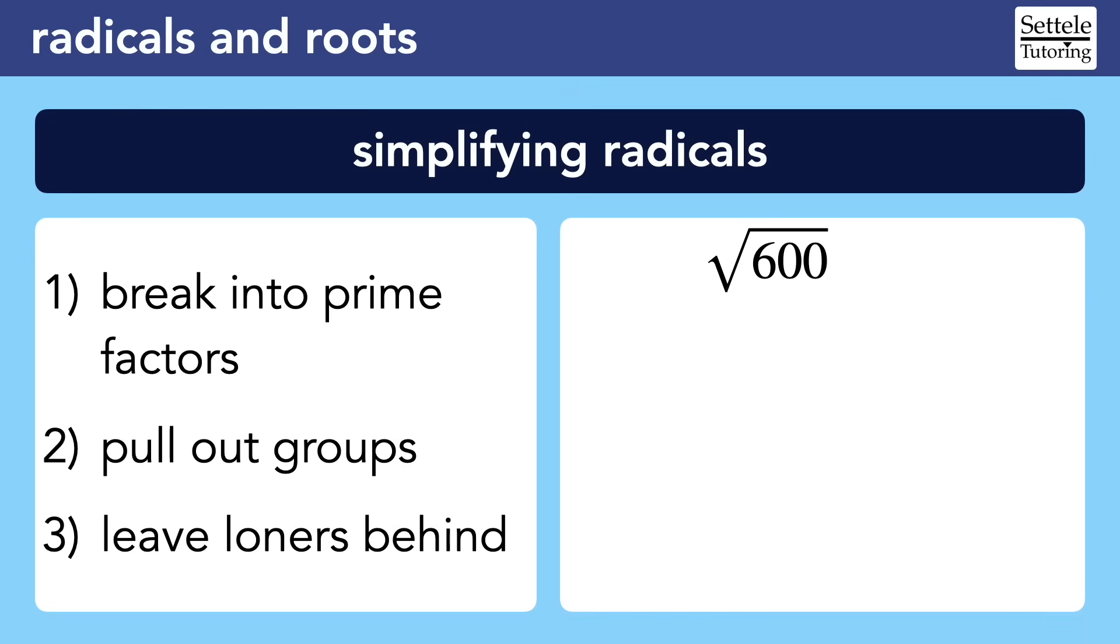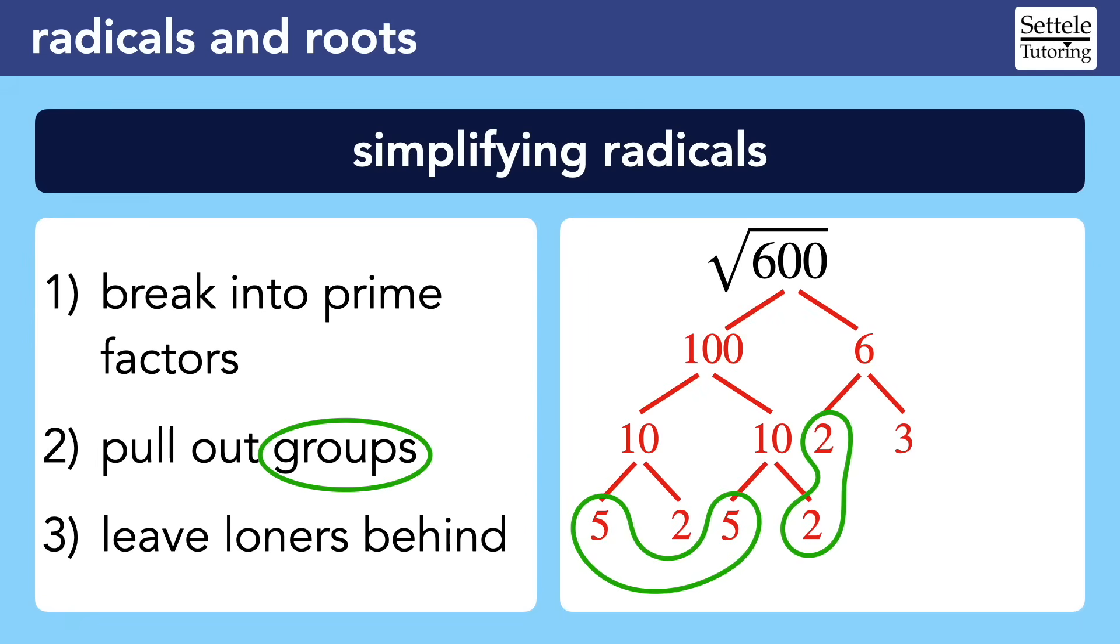My favorite method for simplifying radicals is to break the radical down into its prime factors using whatever pairs you see first. For example, the square root of 600 can be simplified by following lots of different paths, but my first instinct is to break it into 100 times 6. Then I break the 100 into 10 times 10, and each of the 10s into 5 times 2. The 6 gets factored into 2 times 3. Once each branch ends in a prime number, we know that we will be able to fully simplify the radical. Make groups of the same prime number. Since this is a square root, we make pairs. I can make a group of 5s and a group of 2s. There are also some loners that can't pair up. The only 3 has to stay behind, and there is an extra 2 that I can't put into a group. The grouped numbers come out as single values, and the loners stay behind under the radical. We finish simplifying by multiplying all of the outsides and all of the insides, so we find that the square root of 600 is the same as 10 root 6.